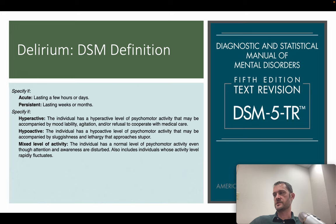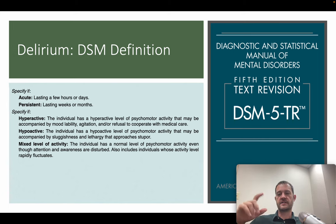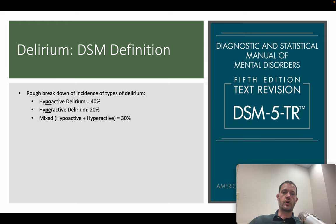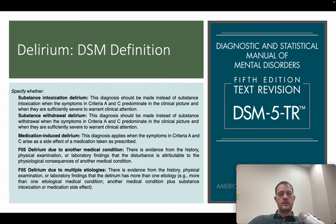Mixed delirium is when a patient is sometimes hyperactive and sometimes hypoactive. This is common in geriatric patients — 'sundowning' is one term used, where the patient sleeps all day, has a disrupted sleep-wake cycle, and is active and psychotic at night. The rough breakdown is hypoactive being more common at about 40%, hyperactive at 20%, and mixed at roughly a third overall.